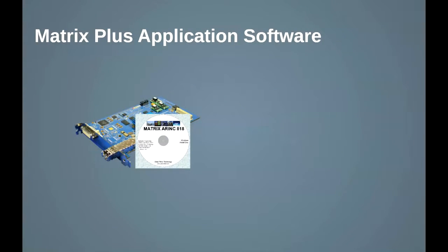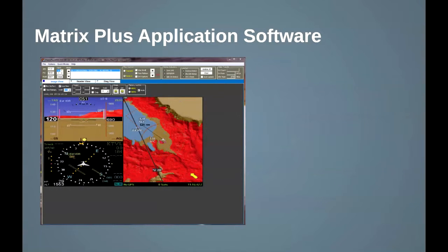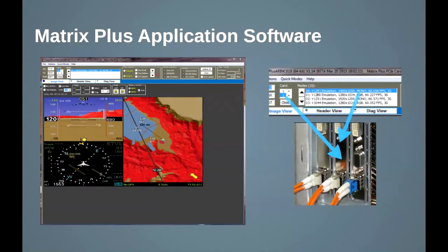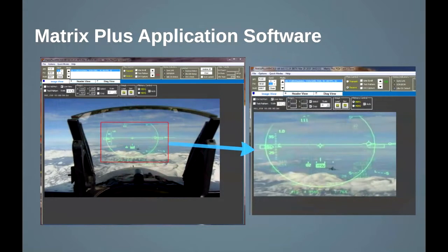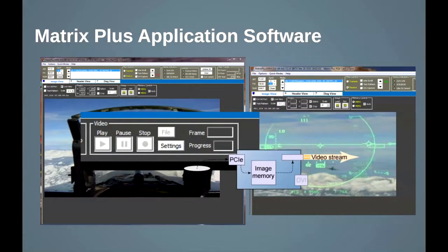Your Matrix card will be delivered with drivers and application software for Windows. Included is our new Matrix Plus ARINC 818 application. This new app makes it easy to manage multiple cards in a PC, and you can easily select particular cards and video modes for ARINC 818 transmit or receive. The app also has many new features such as live capture of regions of interest — simply select the area of live incoming video to see details clearly. You can even play full motion video from video files onto the ARINC 818 link.